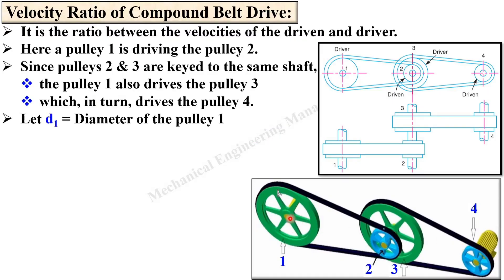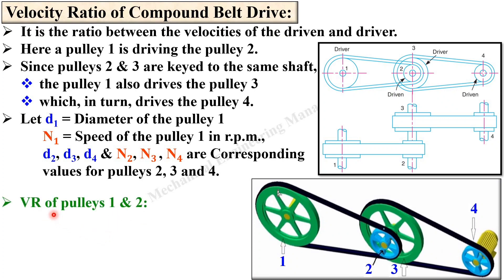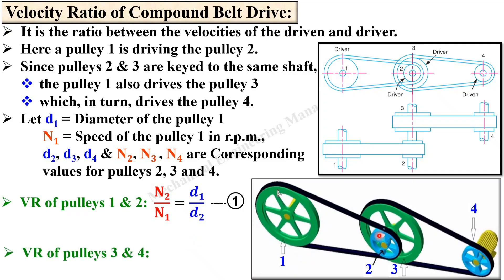Let d1 be the diameter of pulley 1 and n1 be the speed of pulley 1. Similarly, d2, d3, d4 and n2, n3, n4 are the corresponding values for pulleys 2, 3 and 4. As derived earlier, the velocity ratio of pulleys 1 and 2 is: n2 / n1 = d1 / d2 — call this equation 1. Next, for pulleys 3 and 4, pulley 3 is the driver and pulley 4 is the driven, giving: n4 / n3 = d3 / d4 — call this equation 2.